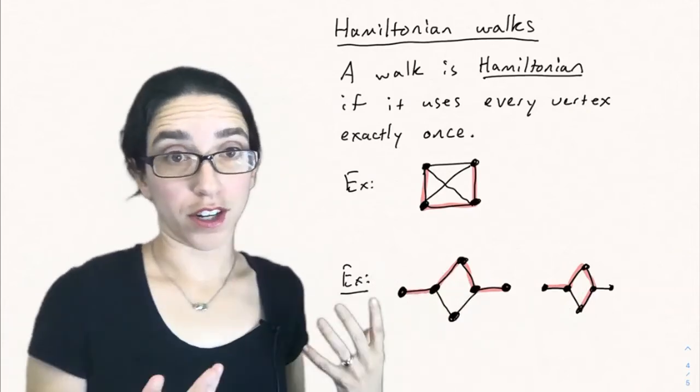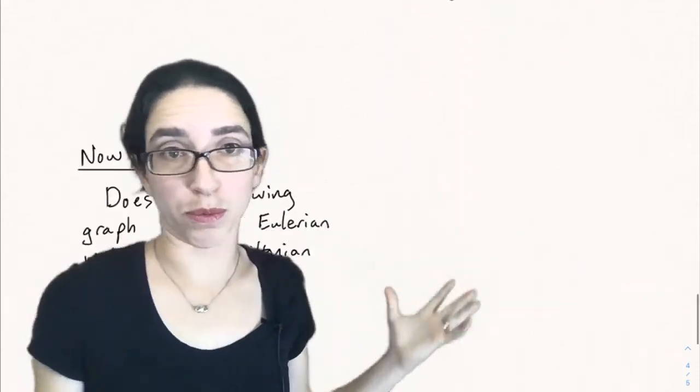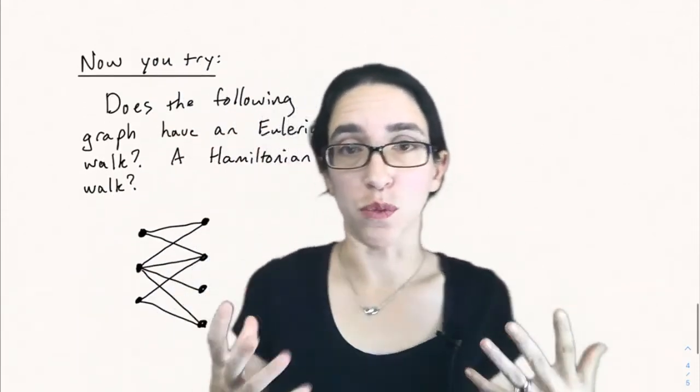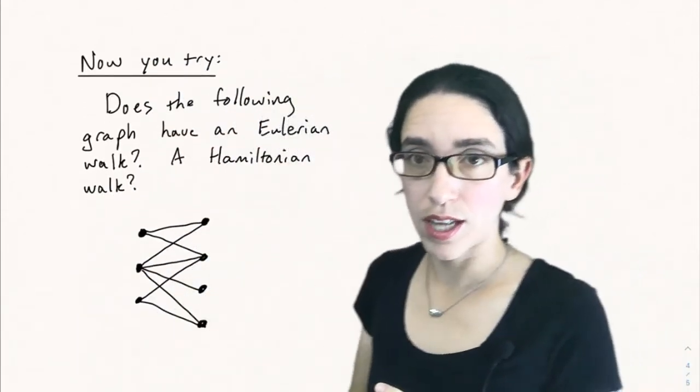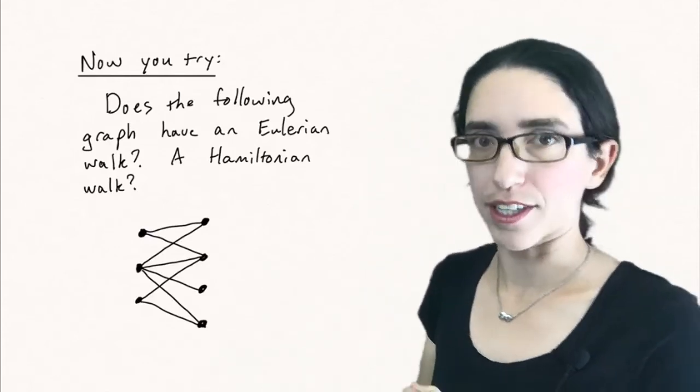Now Hamiltonian walks are a lot harder to classify than Eulerian walks. And in fact, it's a very big open problem in mathematics to figure out which graphs have Hamiltonian walks and how to efficiently find a Hamiltonian walk. It's not as simple as the Eulerian case.